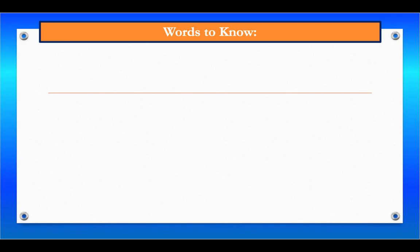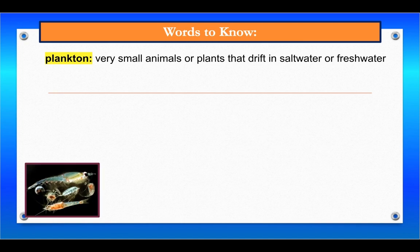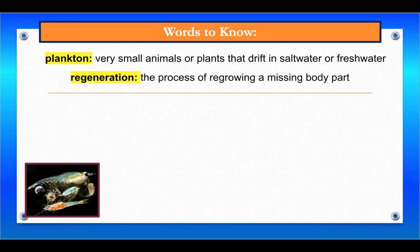The first word is plankton. Plankton are very small animals or plants that drift about in seawater or freshwater. For example, the blue whale eats a type of animal plankton called krill. The next word is regeneration, the process of regrowing a missing body part.